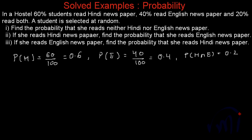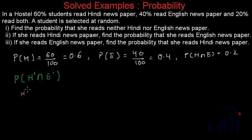For the first part, we have to find the probability that a randomly selected student reads neither Hindi nor English newspaper. That means we have to find the probability of H complement intersection E complement. If you remember De Morgan's law, H complement intersection E complement can be written as (H union E) whole complement.